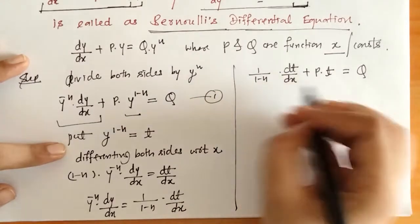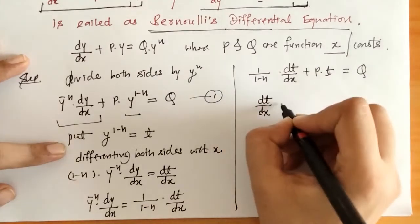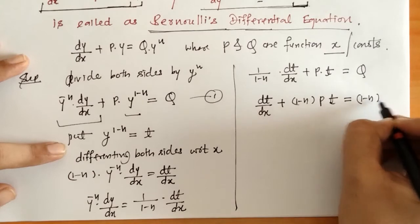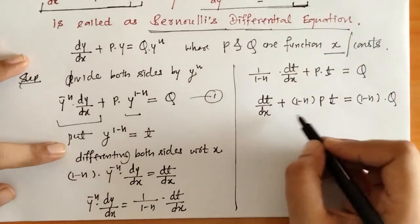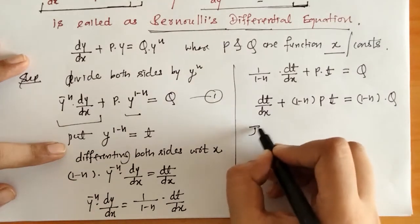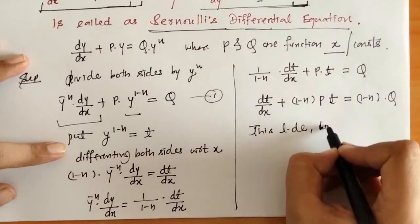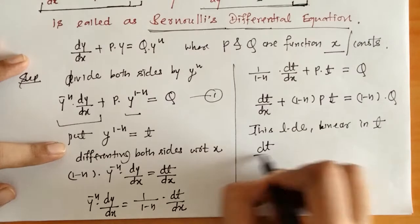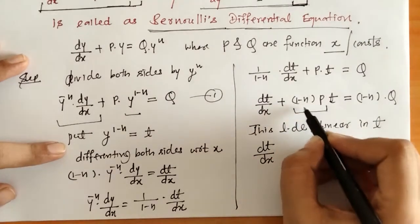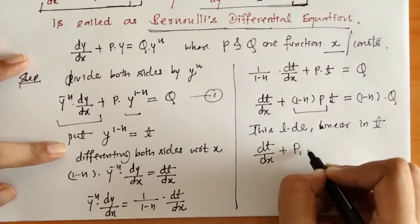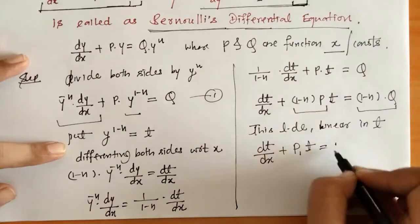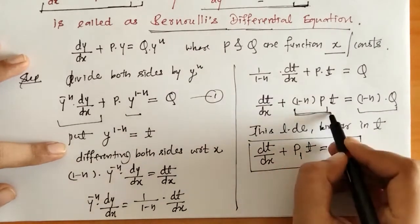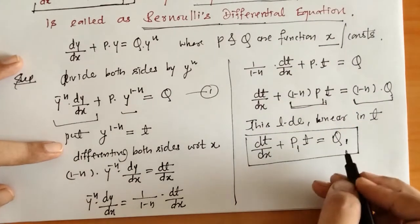By multiplying by (1 minus n) on both sides, we will have dt/dx plus (1 minus n)·P·t equals (1 minus n)·Q. We can check that this is a linear differential equation, linear in variable t. For convenience, we call (1 minus n)·P as P1 and (1 minus n)·Q as Q1. This is the standard form of a linear differential equation, where P1 and Q1 are functions of x.